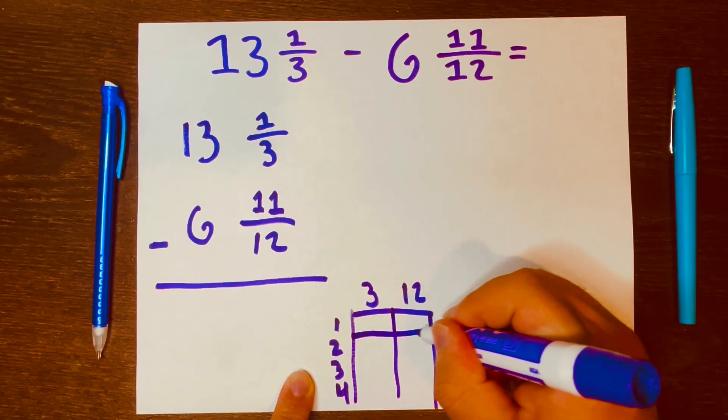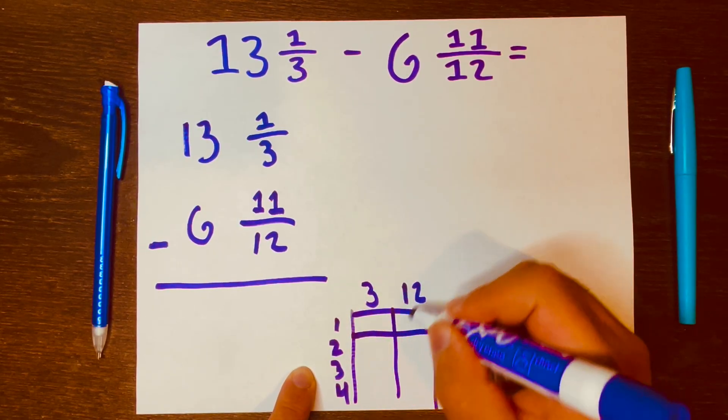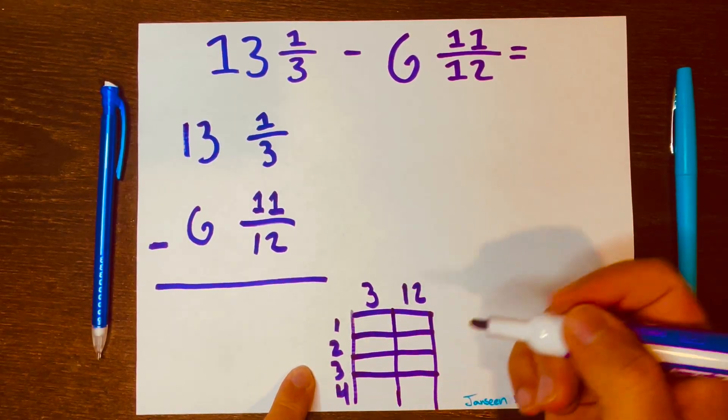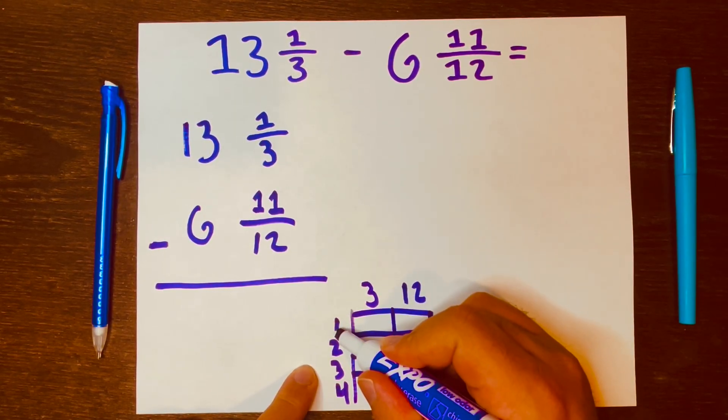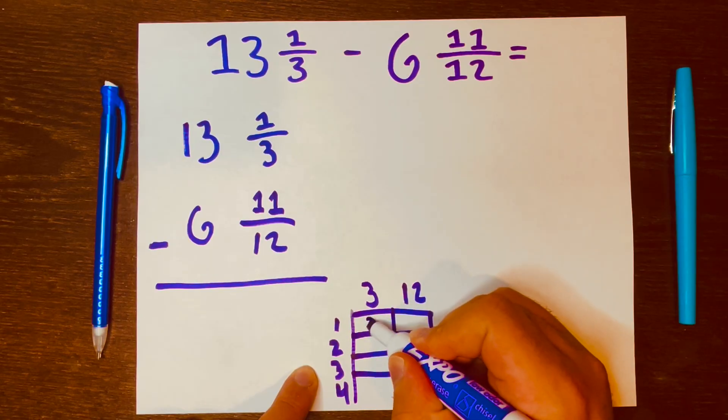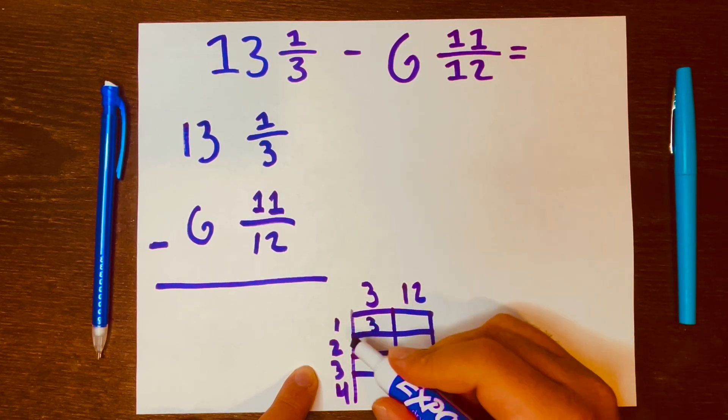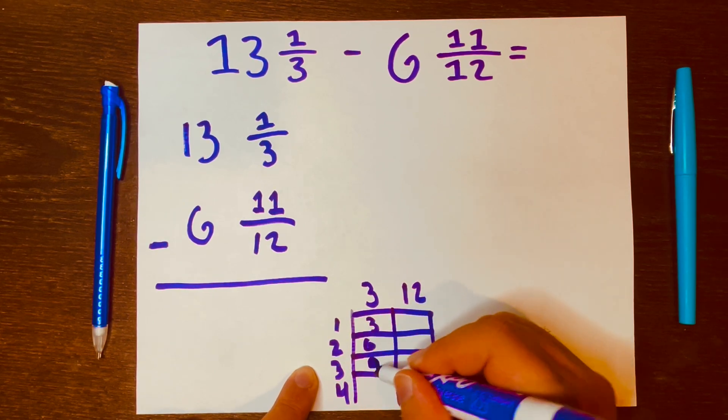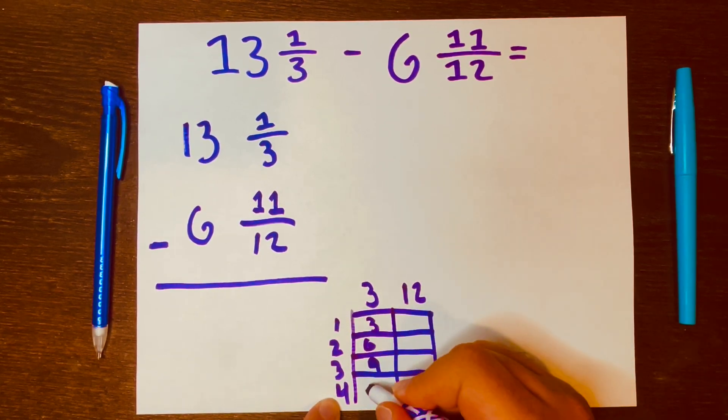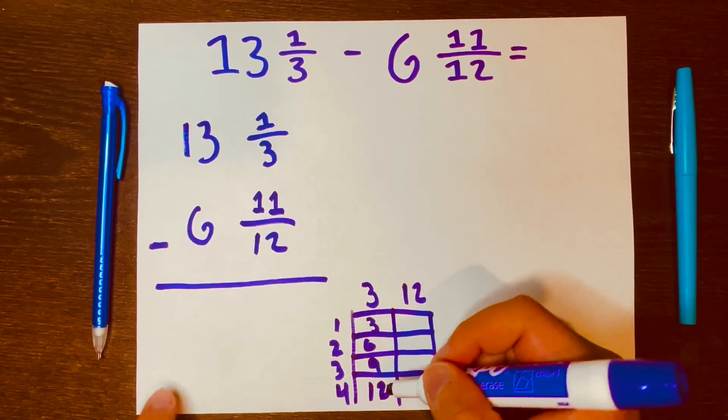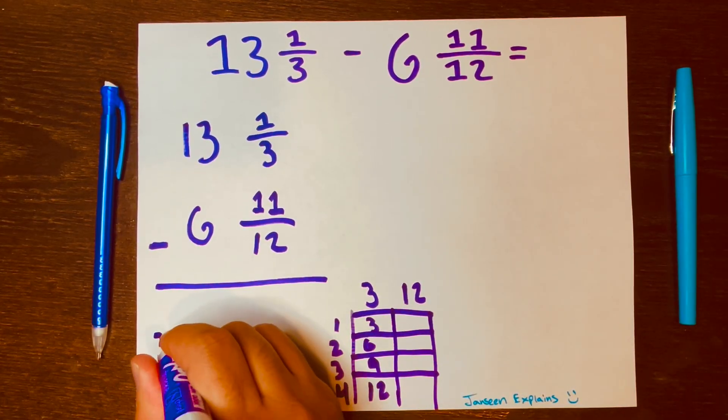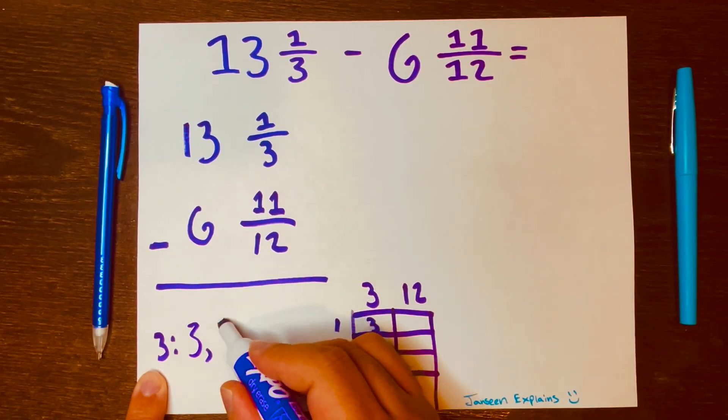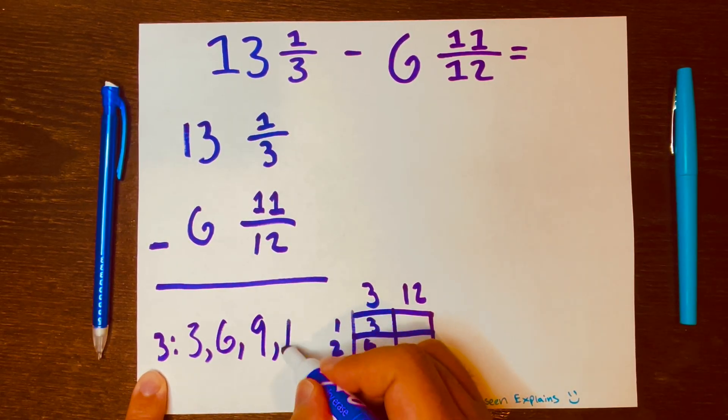So these are the whole numbers that we'll use to multiply the 3 and the 12 so we can find our multiples. So 1 times 3 is 3, 2 times 3 is 6, 3 times 3 is 9, and 4 times 3 is 12. And you can barely see it so I'm just going to write it here. So the multiples of 3 is 3, 6, 9, and 12.